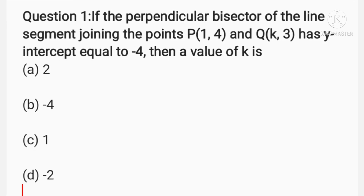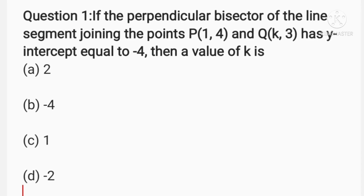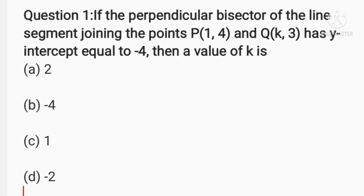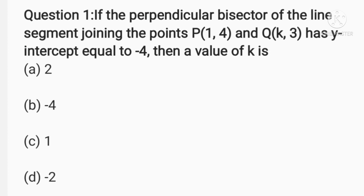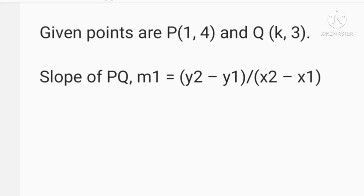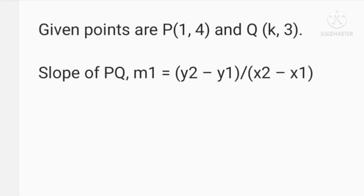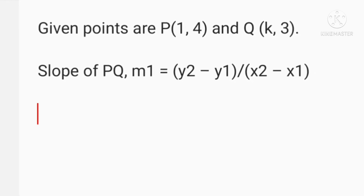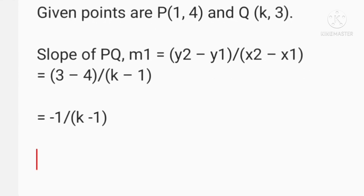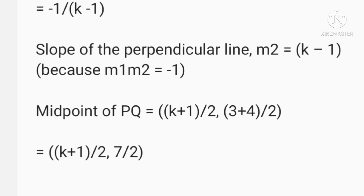Here we have a question: if the perpendicular bisector of the line segment joining the points P(1, 4) and Q(k, 3) has y-intercept equal to minus 4, then find the value of k. Given points: P is (1, 4) and Q is (k, 3). The slope of PQ is (y2 - y1)/(x2 - x1), which gives the slope of PQ as -1/(k - 1).